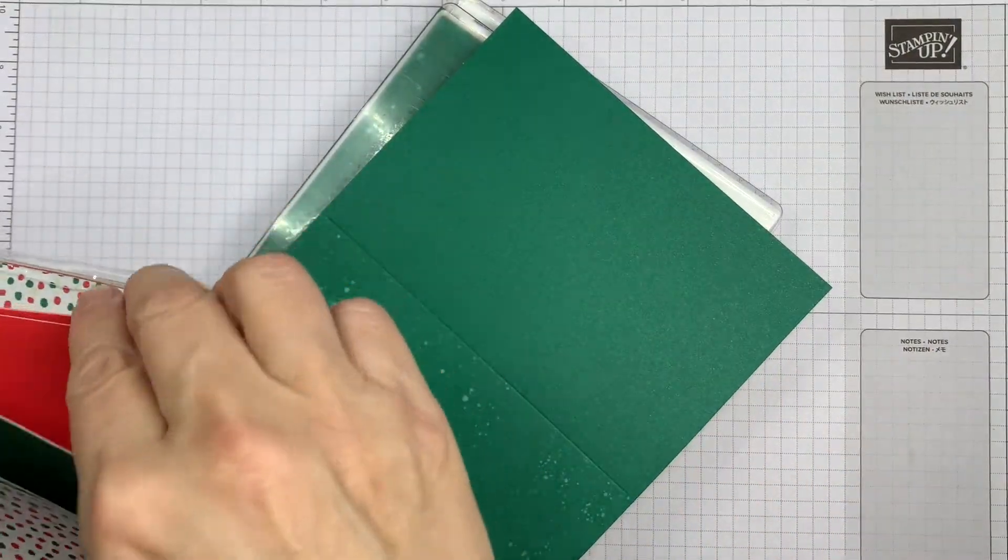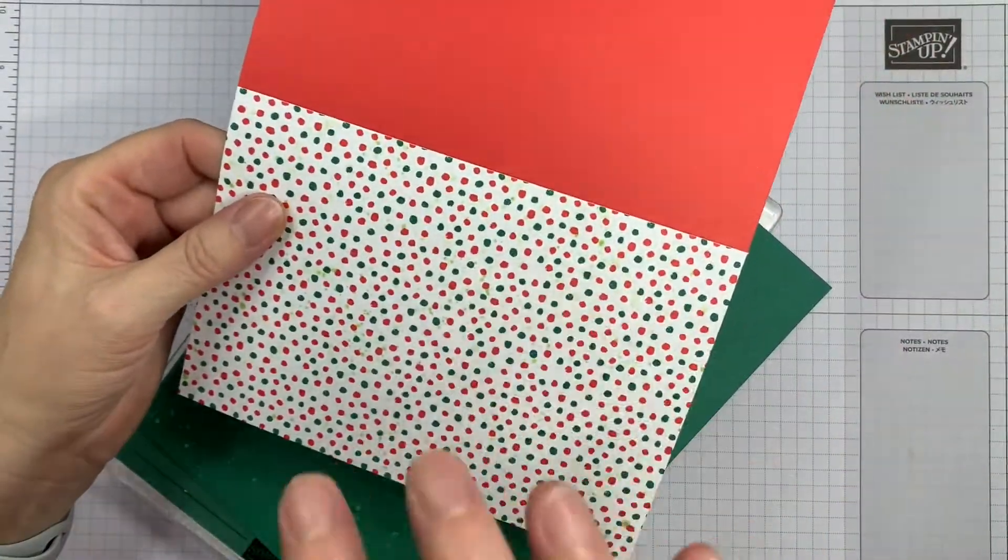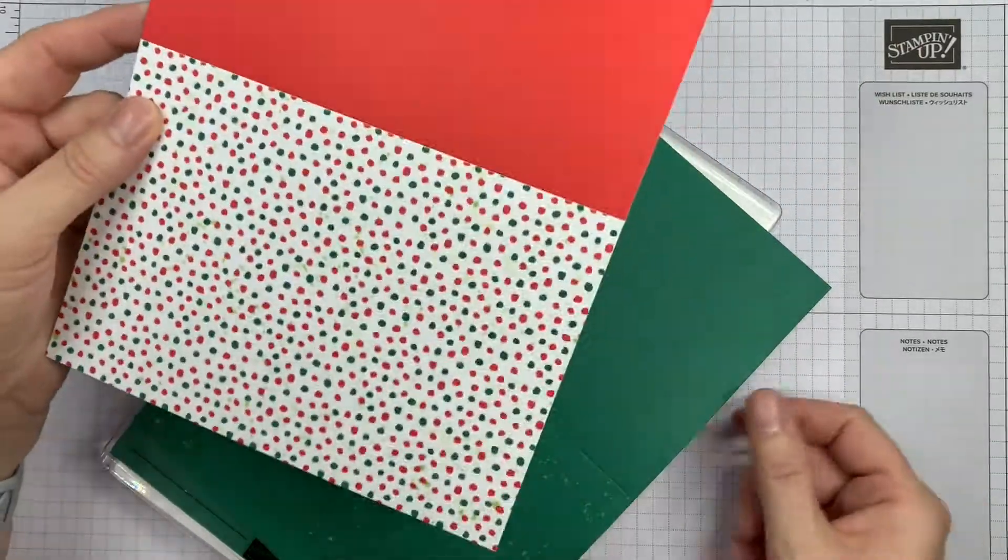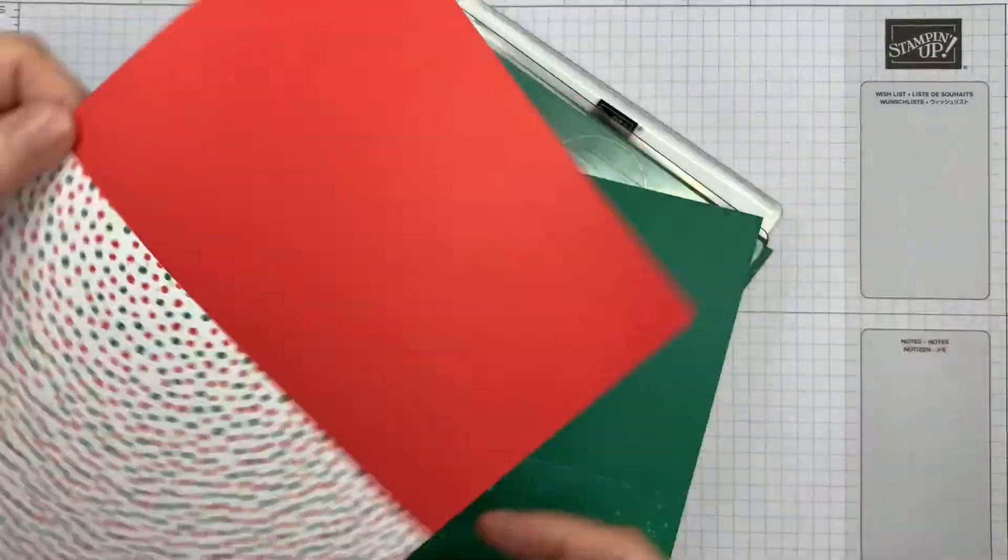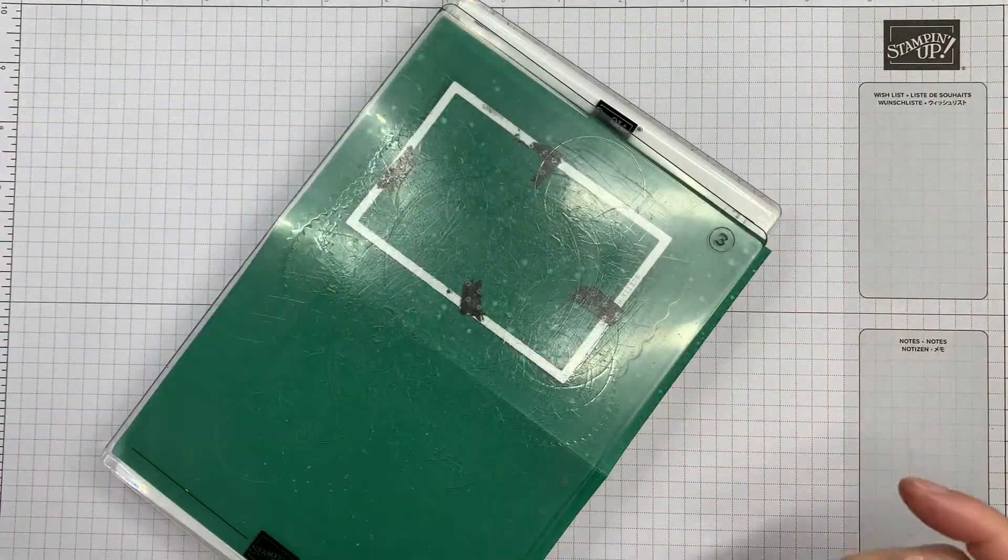I'm using the shaded spruce version of the card today, but you could do exactly the same thing with this one. You could use either side, so decide which way you want your front to be. That's no problem.